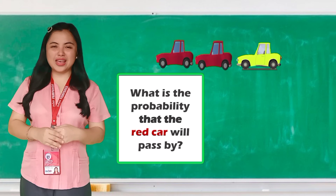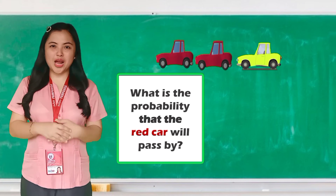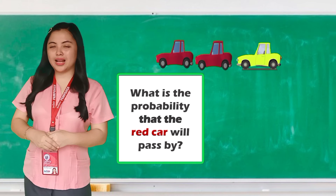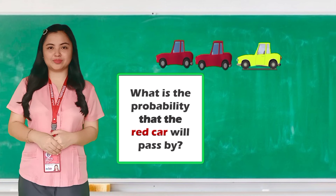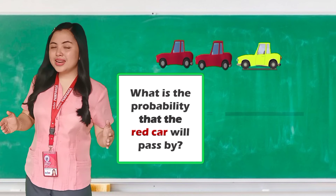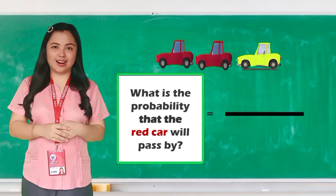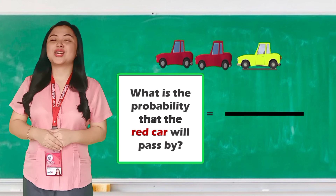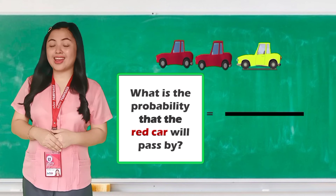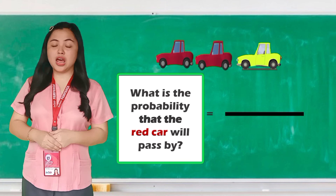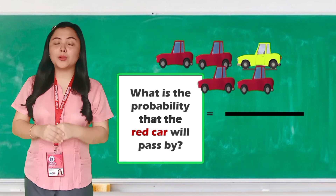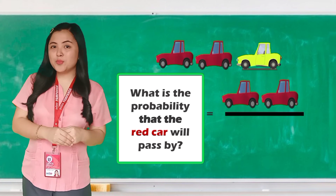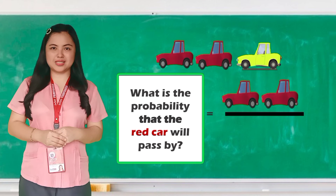Next question: what is the probability that a red car will pass by? How many red cars are there? There are two red cars. Two will be put on the numerator — the number of favorable outcomes.